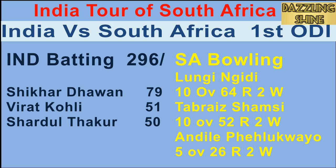First ball of the 41st over, Pell Q to Thakur — going down the leg side, he clips it to fine leg for four. On the fourth ball, a half-volley and Thakur punches it beautifully through the covers — another four runs.